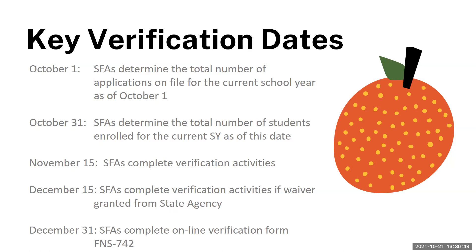There are several key verification dates you need to be aware of. The process starts on October 1 of each year and must be completed by November 15. If your SAU or RA is unable to meet the November 15 deadline, a waiver may be requested from the state agency. This waiver must state the reason and must be signed by the superintendent of schools. If a waiver is granted, your SAU or RA must complete the verification process by December 15. For New Hampshire, the online verification summary report, the FNS 742, must be completed by December 31.